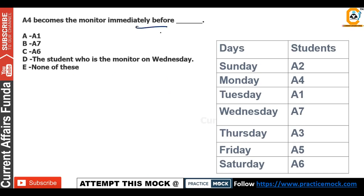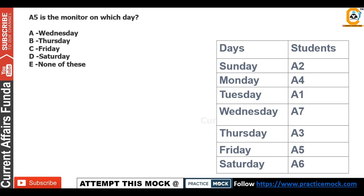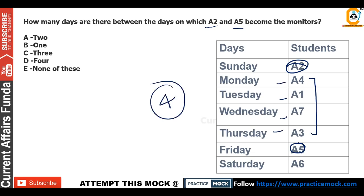So it is very easy — if you connect these points this way, you will solve this question without any ambiguity. Given that A4 becomes monitor immediately before A1, the answer is option A. Next: on which day is A5 made monitor? A5 is on Friday, so option C is our correct answer. Then, how many days are there between the days on which A2 and A5 become monitor? Counting: 1, 2, 3, 4 — so 4 days. Option D is the correct answer.